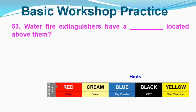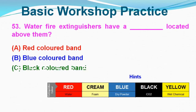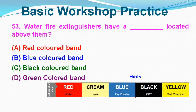Question No. 53: Water fire extinguishers have which colored band located above them? Option A: Red colored band, Option B: Blue colored band, Option C: Black colored band, Option D: Green colored band. Correct answer is Option A, Red colored band.